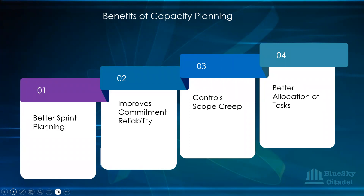Over-committing is when you commit to more than what your capacity is saying. Under-committing is when you take in stories that are less than the team's capacity. When you under-commit, you finish all the work before the end of the sprint. When you over-commit, you won't finish what you need to do and you'll have a spillover into another sprint.